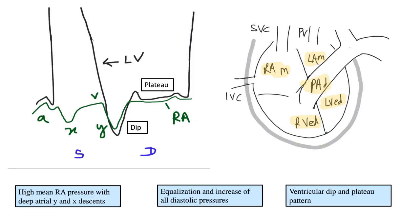Let's understand these three pressure characteristics in diastole one by one. First, equalization and increase of all diastolic pressures. Because of this shell of pericardium which is thickened, it becomes a constricting shell around all these cardiac chambers, leading to equalization of the pressures within the heart. This is akin to the Midas touch wherein anything the pericardium constricts or touches, it changes its pressure to its own pressure.